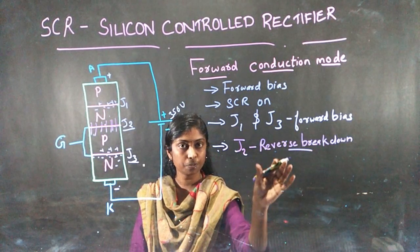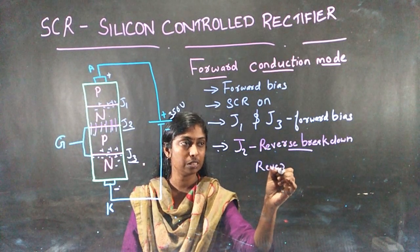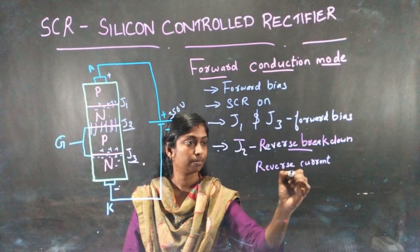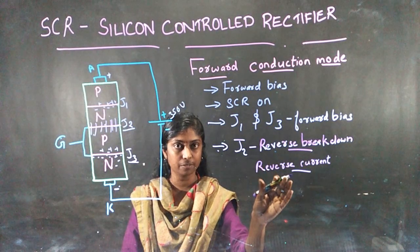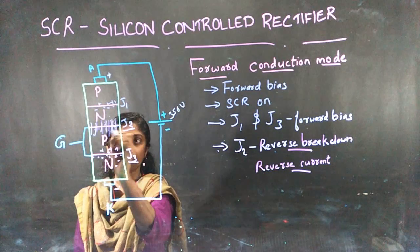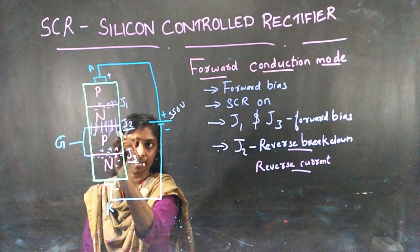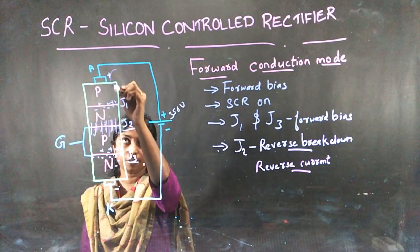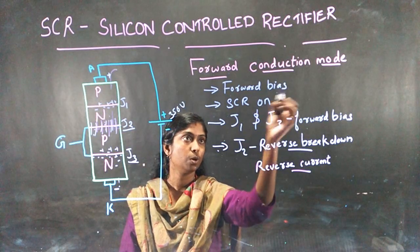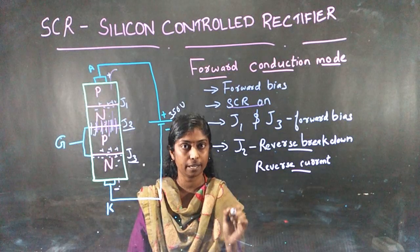Because of this reverse breakdown, reverse current will be flowing through the J2 junction. And because of this reverse current, the SCR will start conducting. Before, J2 was in the blocking state; now reverse current is flowing and J2 is in conduction mode. SCR will be conducting from anode to cathode — current flow will be there. So SCR is in the on state, that is your forward conduction mode.